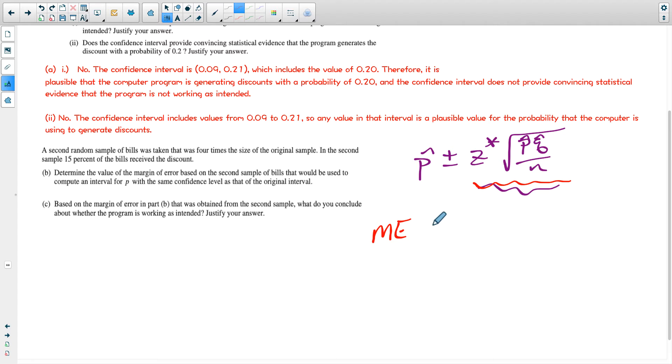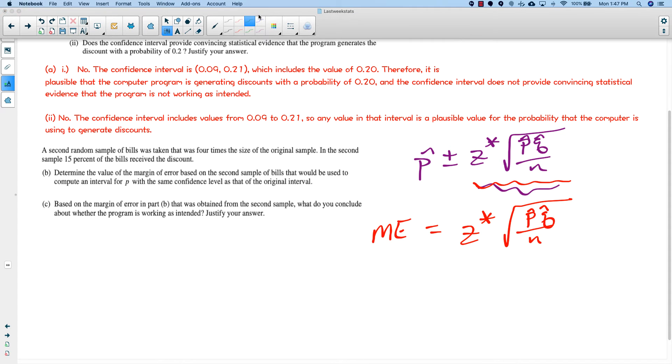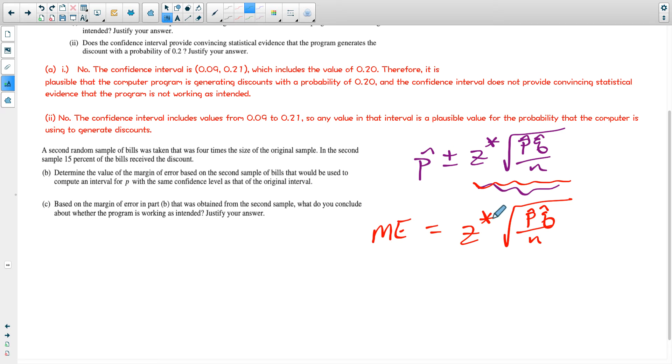They're saying now we're going to use a sample that's four times as large. The margin of error is equal to Z star times the square root of P times Q over N. They said they're going to make the sample four times larger. So what happens, what do you have to do to this equation to keep it balanced if you put a 4 here? Let me pull that out. Instead of putting it like that, let's write it like this: square root of 1 over 4. That's the same. And so if we work that out, the square root of 1 over the square root of 4, that's equal to 1 half.